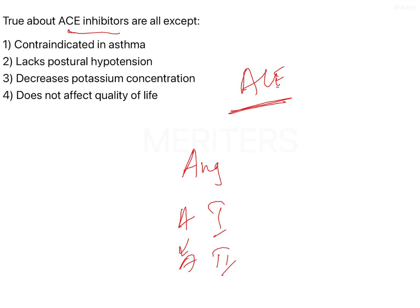With all drugs that we use, there is going to be some form of side effect or adverse effect. One of the most important side effects of ACE inhibitors is that they increase the release of bradykinin. This is a very significant side effect because bradykinin acts on the smooth vessel walls of the bronchioles and causes constriction.